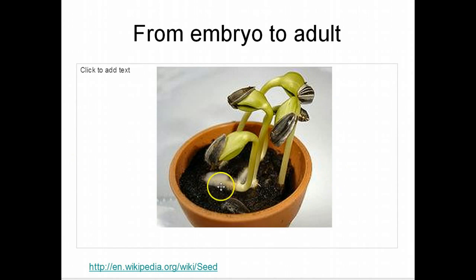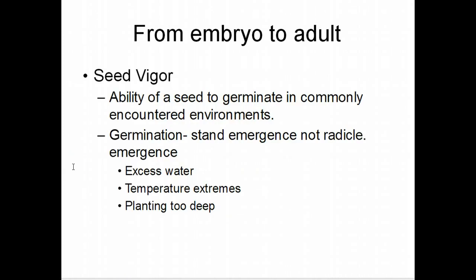Germination ends when the radical actually emerges — that is the formal definition from a seed physiology standpoint. From there to a small seedling, most of the initials for the entire plant are already established; we can find cells already fated to become the ear, tassel, or other plant parts.